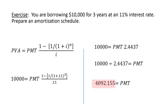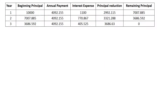Now I'll take you step by step through preparing the amortization schedule. The schedule has the following columns: years (we have three years since this is a three-year loan), beginning principal, annual payment, interest expense, principal reduction, and the remaining balance — also called remaining principal or outstanding balance. First, we enter the number of years and the annual payment, which is the same for all years at $4,092.155.